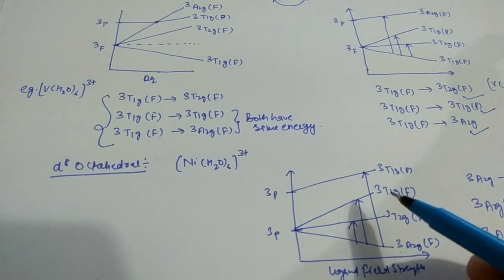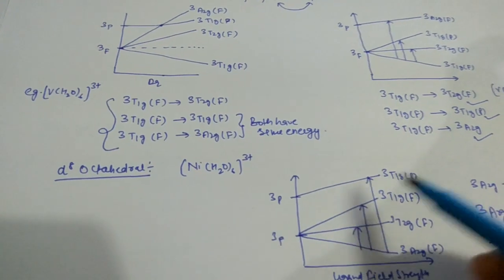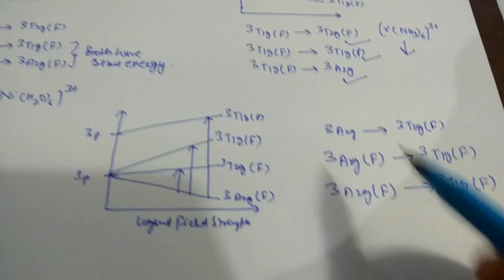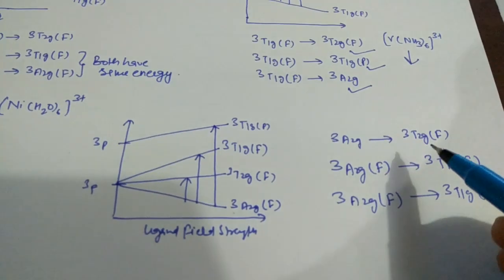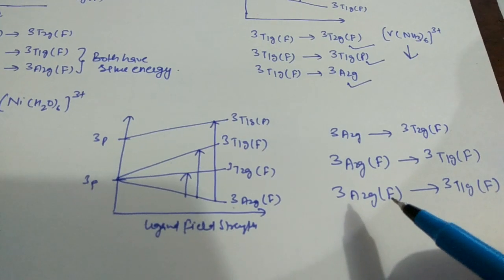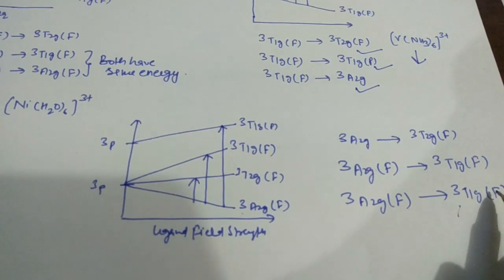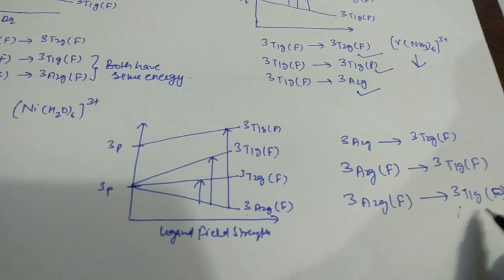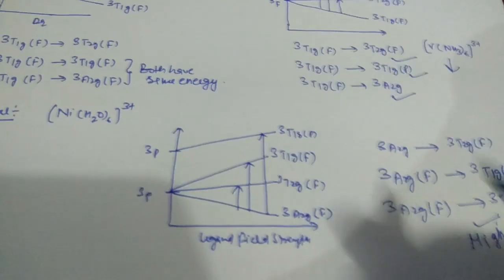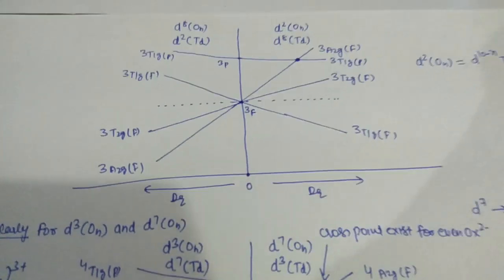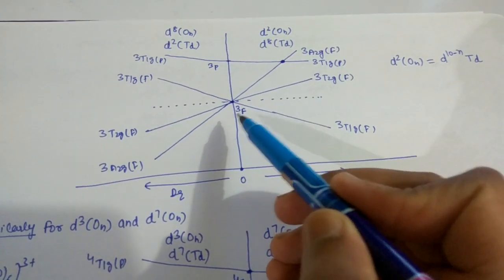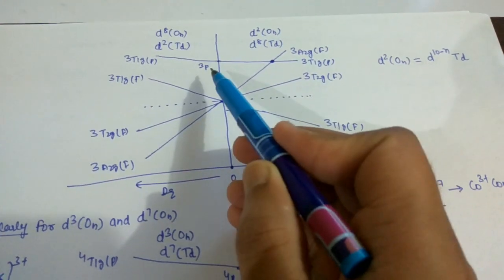So for d⁸, we get three types of transitions: ³A₂g(F) to ³T₂g(F), then ³A₂g(F) to ³T₁g(F), and then ³A₂g(F) to ³T₁g(P). The transition to ³T₁g(P) has the highest energy and the first transition has the lowest energy. We can summarize these transitions in a simple Orgel diagram showing transitions from the ³F to ³P levels.